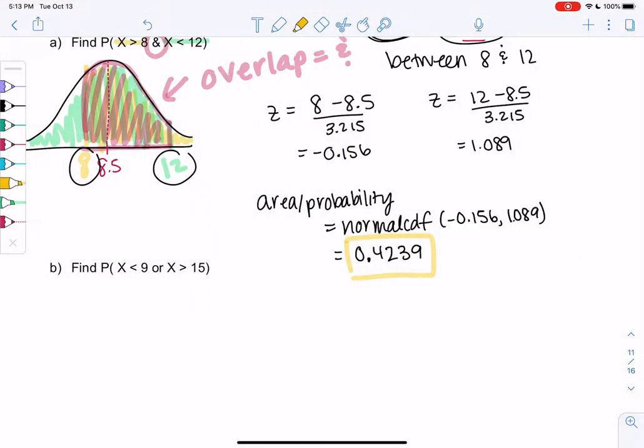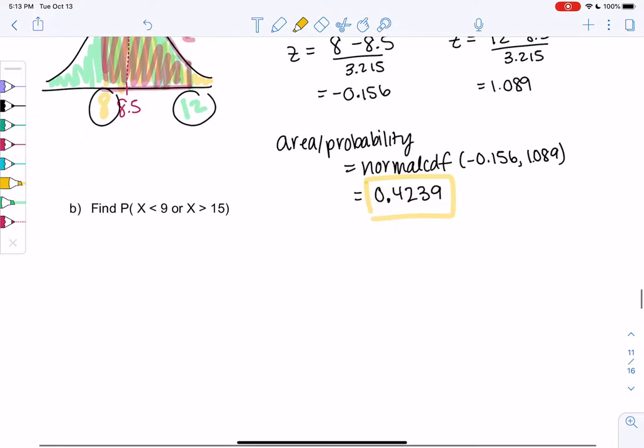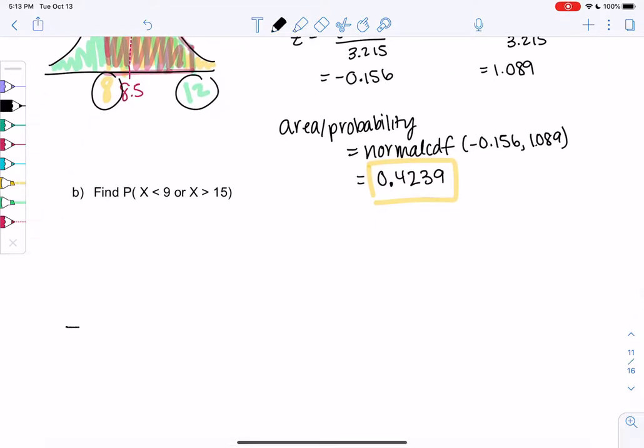And we get a probability or area of 0.4239. So z-scores and then we find area. Let's sketch the same curve again. So we still have a mean of 8.5 in the middle. But now we're going to do an or. Remember, or means either.